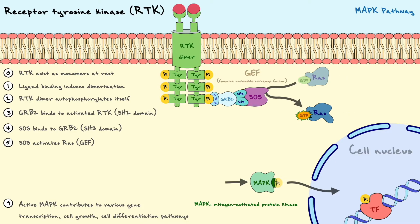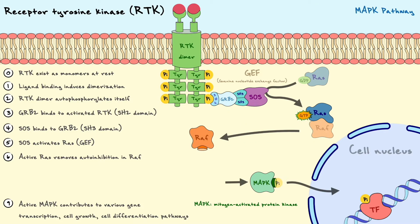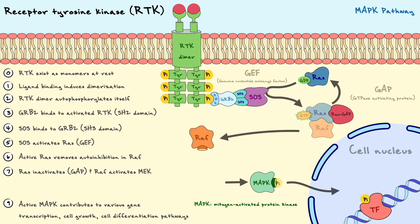Now that RAS is active, it removes auto-inhibition in another kinase called RAF, but this does not fully activate RAF just yet. To fully activate RAF, it must dissociate from RAS, and the dissociation is accompanied by the hydrolysis of GTP to GDP. RAS G-proteins are rather slow at hydrolyzing their GTP, so additional proteins called GTPase activating proteins — also known as GAPs, like RAS-GAP — bind to the G-protein to facilitate the hydrolysis reaction. This is another important difference from trimeric G-proteins, whose alpha subunits were able to hydrolyze GTP to GDP on their own after interacting with effector proteins. RAS cannot do this hydrolysis quickly on its own and therefore needs an additional protein to terminate the signal.